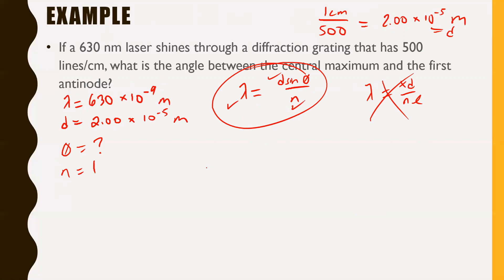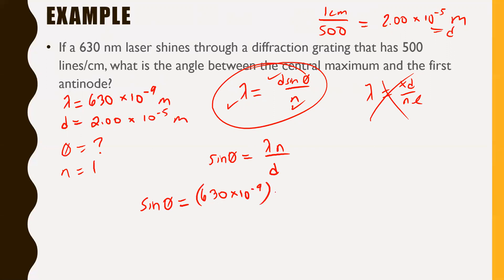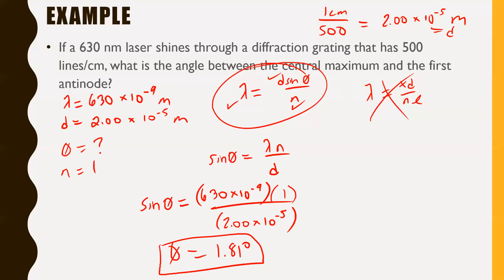Isolating sin(θ): sin(θ) = λN/D = (630 × 10⁻⁹ × 1) / (2.00 × 10⁻⁵). Taking the inverse sine gives θ = 1.81 degrees. That's our angle — there wasn't too much to it. It's just a matter of listing your variables and making sure you can plug in the rest.